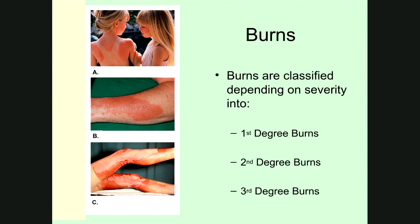First degree burns tend to heal really well on their own. Second degree burns also tend to heal well on their own, as long as you don't get infection. But third degree burns do not heal on their own because the stem cells capable of replacing damaged skin are located around hair follicles embedded in the dermis. If you destroy the dermis — which is the case with a third degree burn — you've destroyed those stem cells, preventing them from replacing the skin.